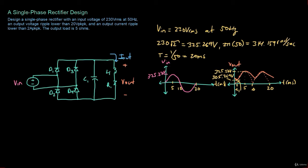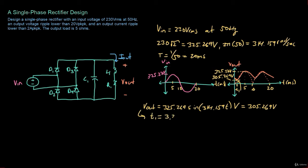Since the dashed output voltage is of the form Vs·sin(ωt), we can set that equal to 305 volts to find when the input voltage equals the minimum threshold, and solve for T1. The output voltage follows: Vout = 325.269 · sin(314.159 · t) volts. Setting this equal to 305.269 volts and solving gives T1 = 3.87796 milliseconds.